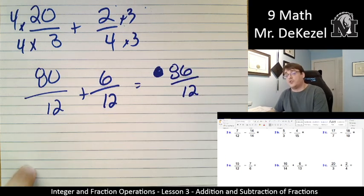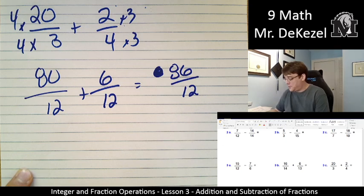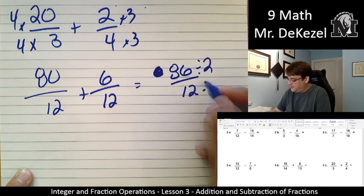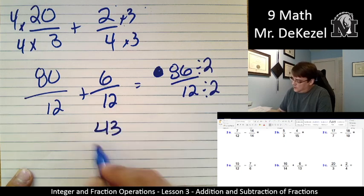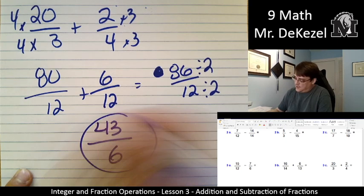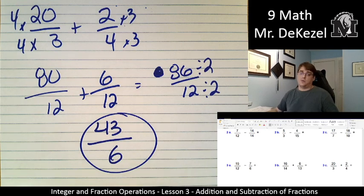I'm going to go ahead and reduce. I know I can. I'm going to divide them both by 2. They're even. That would leave us 43 over 6. And that is as low as we can go. You could go ahead and long divide it if you wanted to get a decimal. But not necessary. And we're working specifically with fractions. Thank you so much for watching, everyone. And I will see you soon.